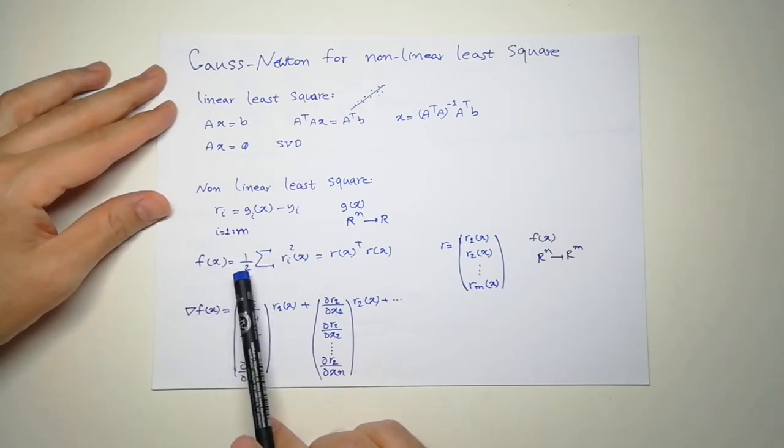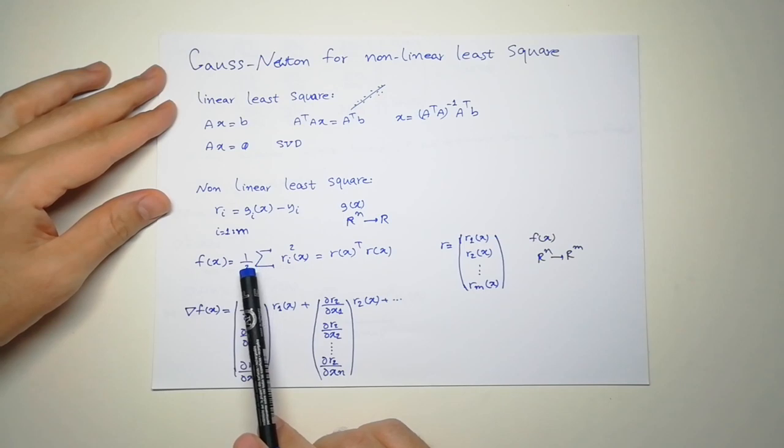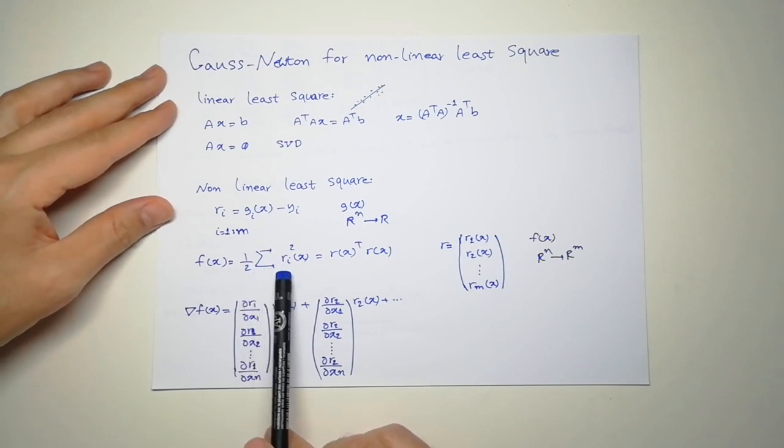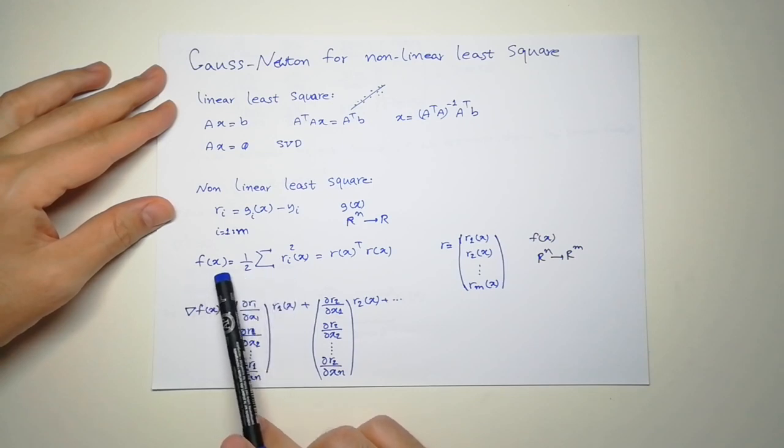So we define a new function and the function is the L2 norm of R. We try to minimize F.